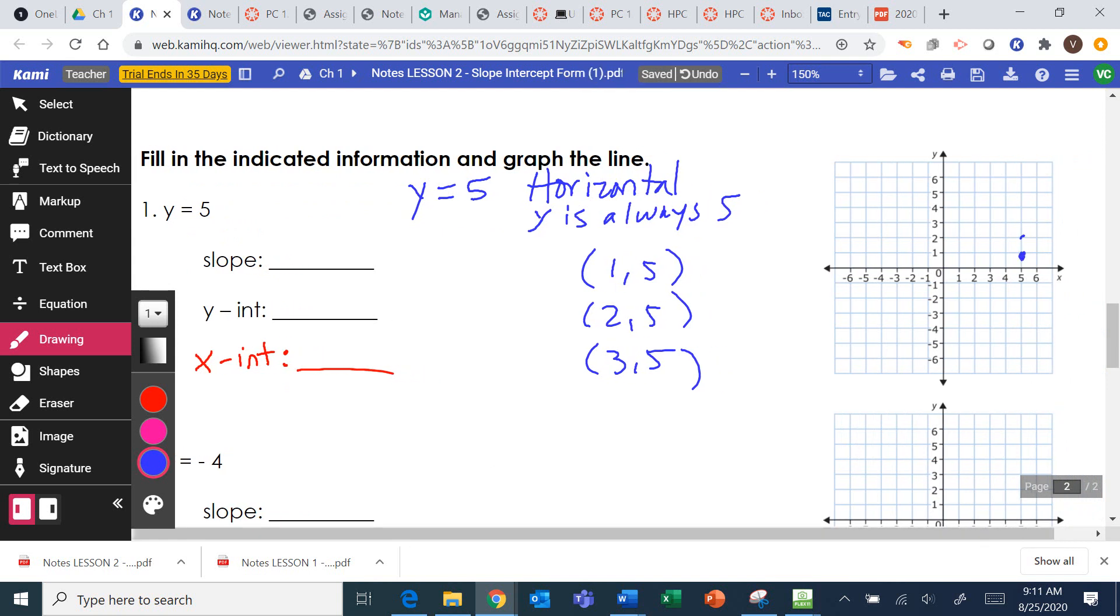1, 5, 2, 5, 3, 5. y is always 5. That's what that equation says. You see how I'm making a horizontal line? You can take our line and connect.